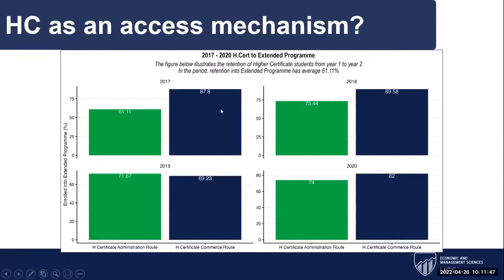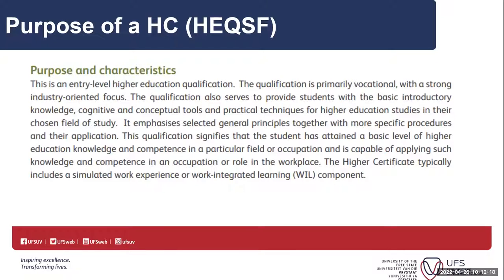In the BCom route, 88% of our commerce higher certificate students came back the following year and enrolled in the BCom extended program. This trend exists across all four cohorts. We do see that students are moving from a higher certificate to an extended program, ultimately with the aim of graduating in one of our mainstream programs. And that's where I ask the question: if this is what students are doing, is our higher certificate fit for purpose?